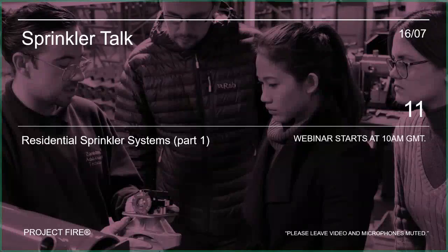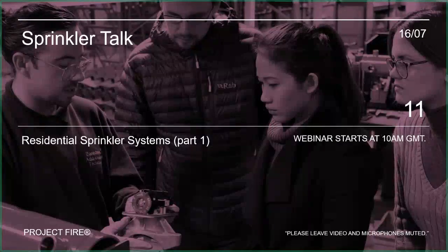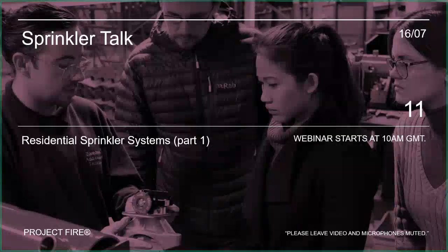You get to see quite a nice effect as the dye from the bulb — the sprinkler bulb — kind of pours out into the water around it like a little firework going off in the water. It's quite a nice thing to see. So today we are looking at residential sprinkler systems part one.